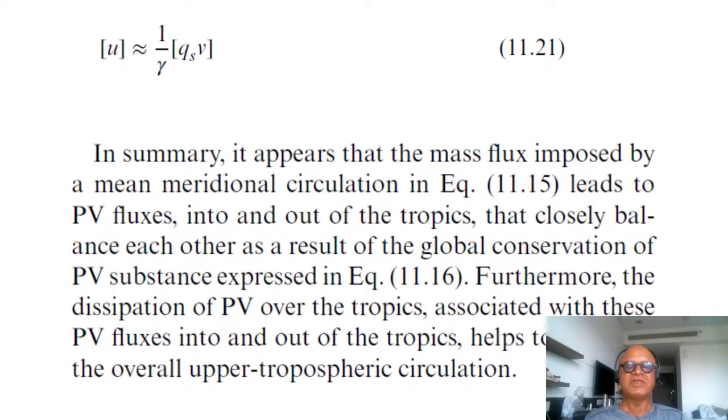Furthermore, the dissipation of PV over the tropics associated with these PV fluxes into and out of the tropics helps maintain the overall upper tropospheric circulation. This has all kinds of consequences that we will see later on, but it's a really amazing finding of how the tropics and extra tropics are communicating and how the input from the extra tropics into the tropics and the tropics into the extra tropics together are creating these very special situations in the upper atmosphere.